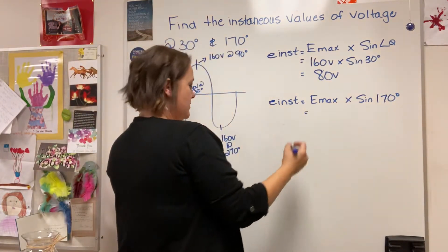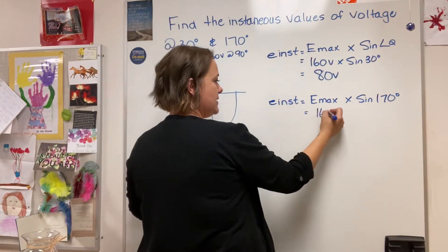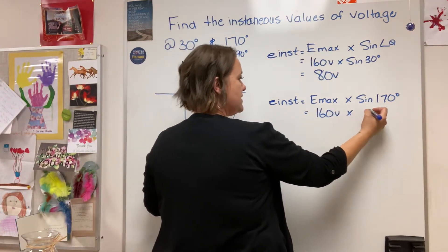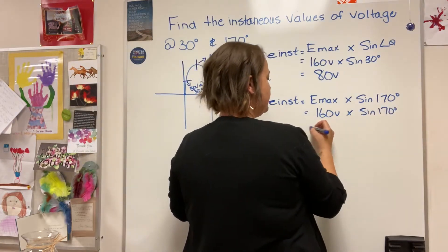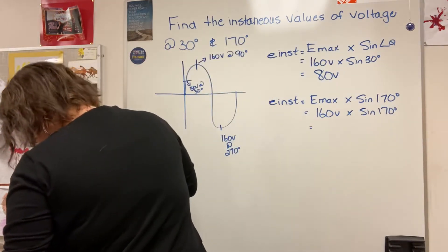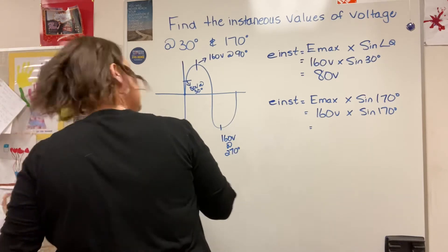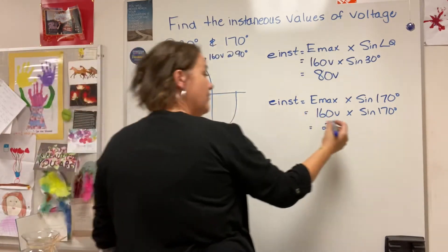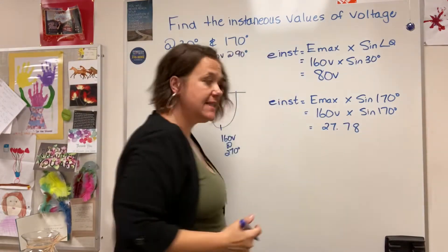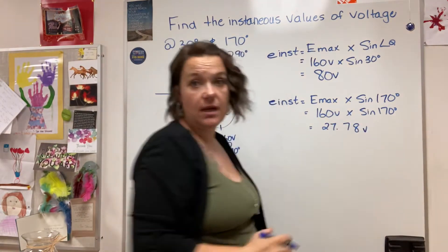Our e maximum is going to be 160 volts times the sine of 170 degrees. Our e instantaneous works out to be 27.78 volts. Let's now have a look at that on our sine wave.